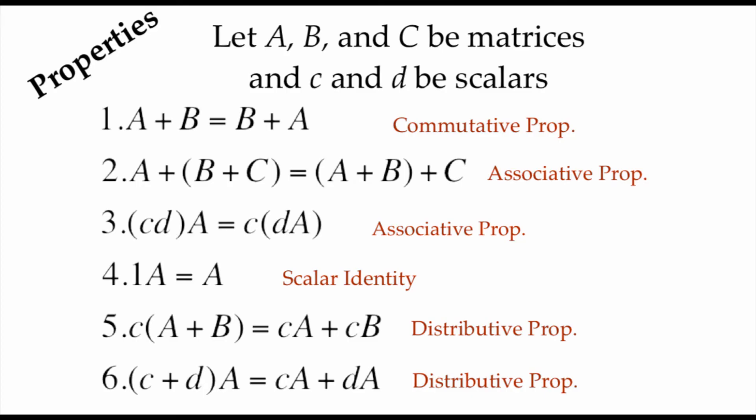Now just like operations with regular numbers have properties, same thing going on with our matrices. So if we've got A, B, and C as matrices, and then we've got C and D as scalars, property number one: if we take A plus B, that should be the same thing as doing B plus A. That's our commutative property. Second thing on the list is our associative property which means that we're allowed to regroup things like addition and subtraction. Three, we've also got an associative property with multiplication so we can regroup those things as needed. For number four, a scalar identity: if we take 1 times matrix A, we're just going to get matrix A back as our answer. Five and six are showing examples of our distributive property.